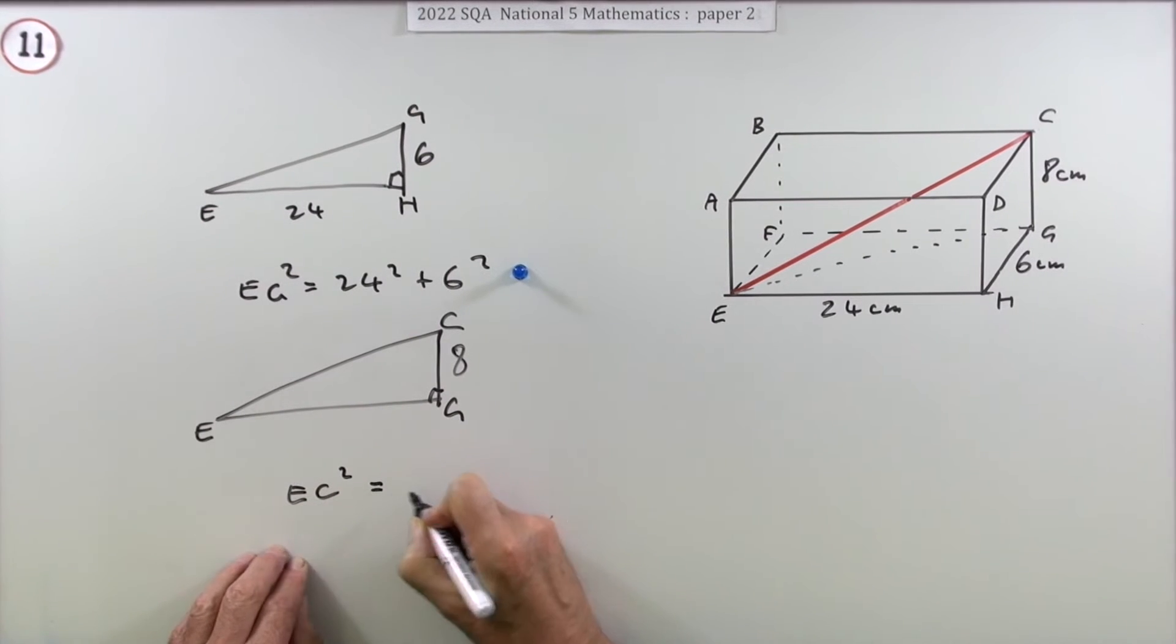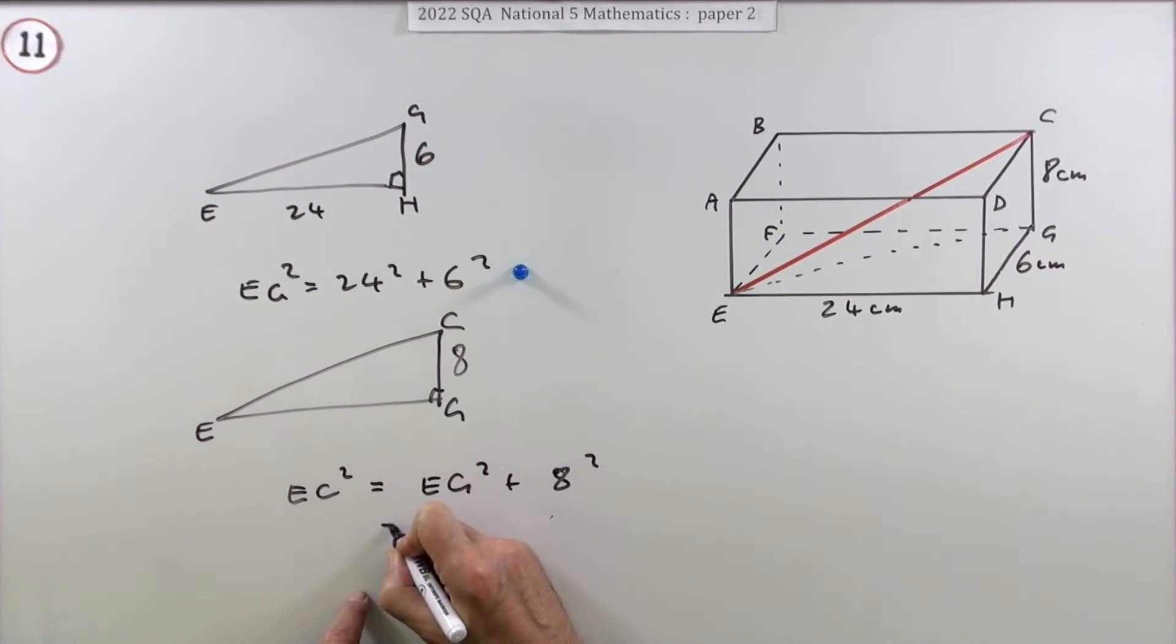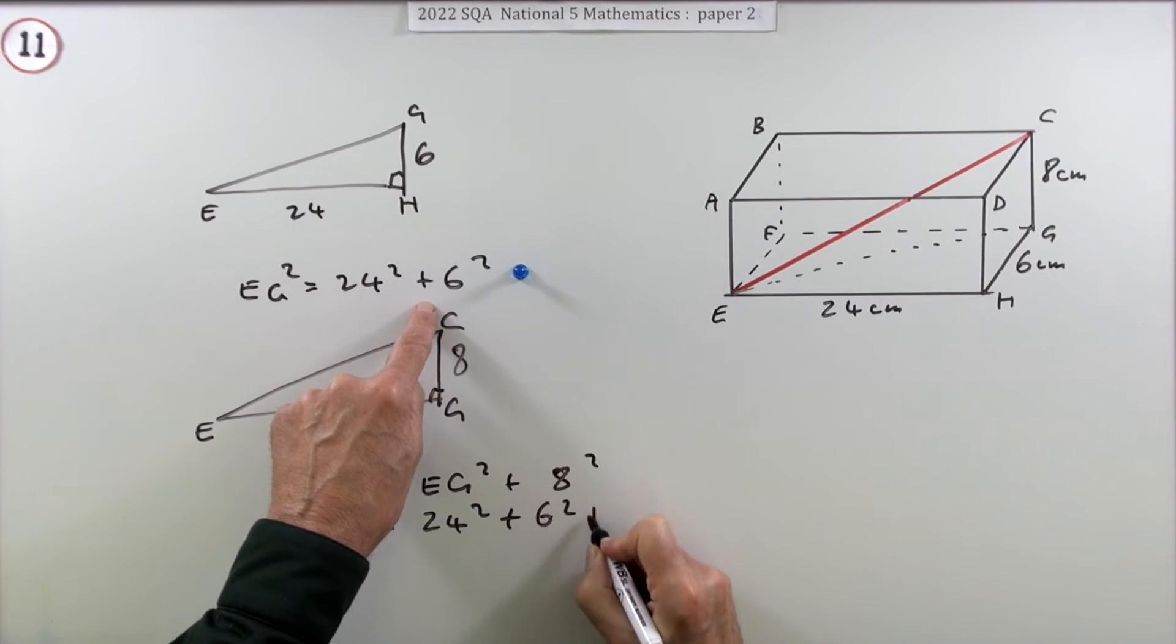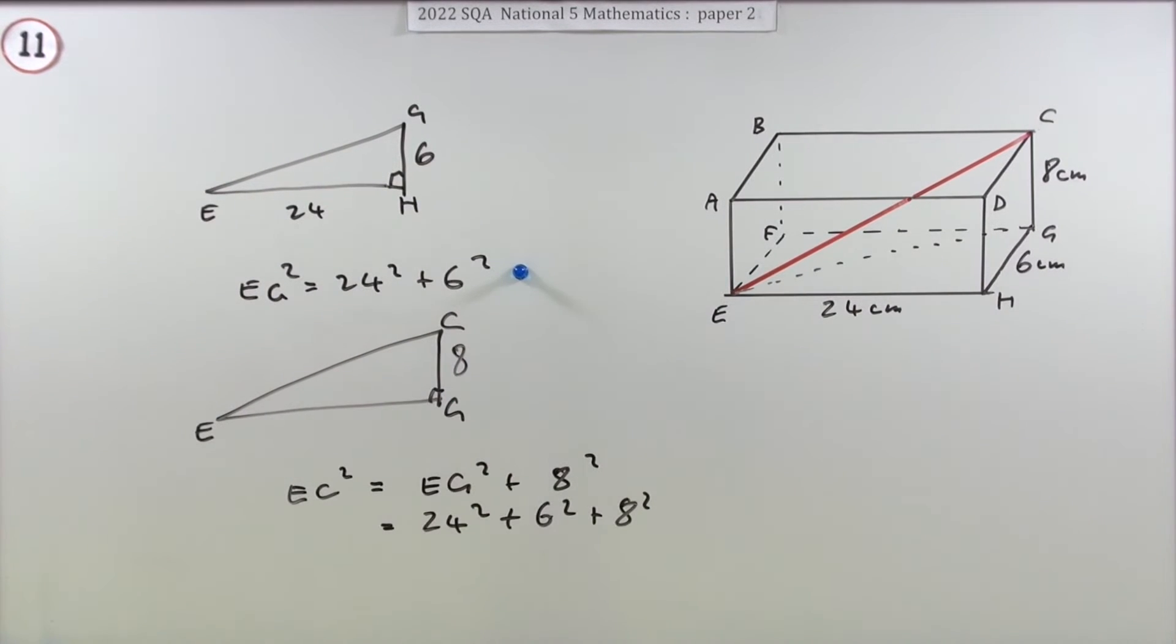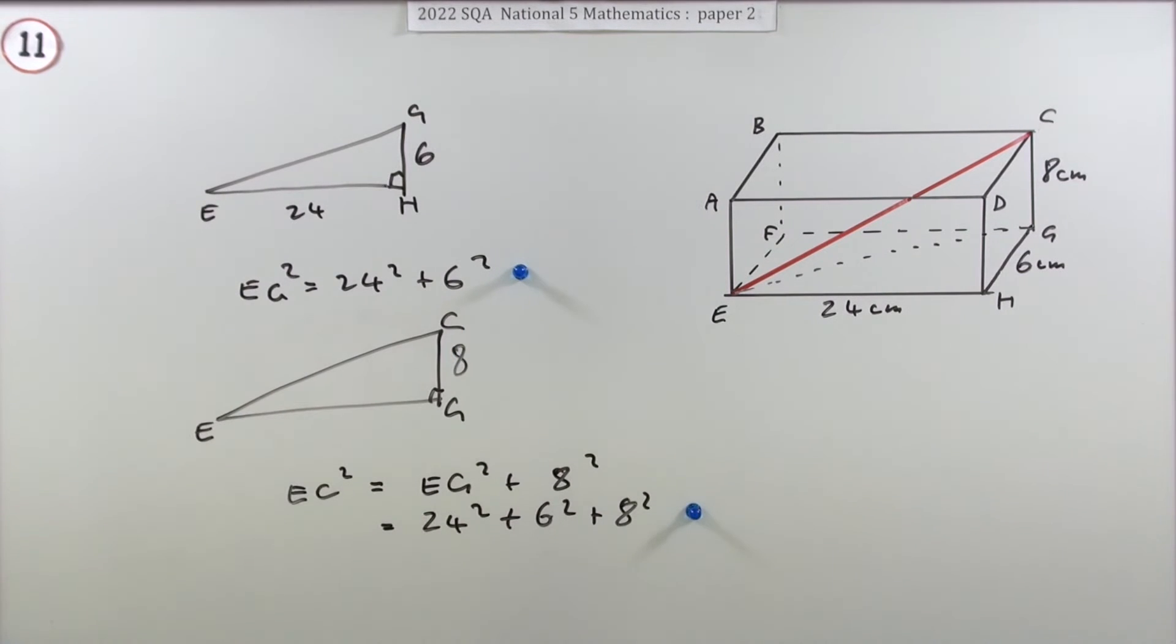So now you can say EC squared will be EG squared plus the 8 squared. But you knew that was just 24 squared and 6 squared and 8 squared. Now doing that gets a mark. If you'd worked out the intermediate answer and put it in here and squared it, you'd still get it, but it's more sensible just to leave it alone—in other words, keep it exact. Saves a lot of working.